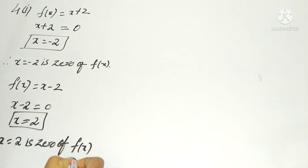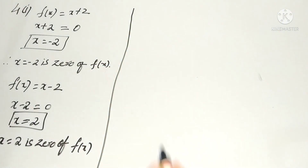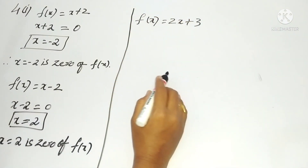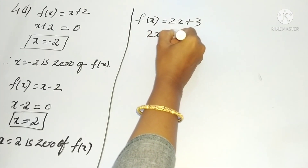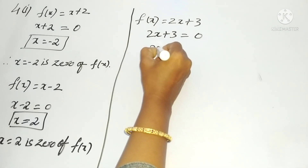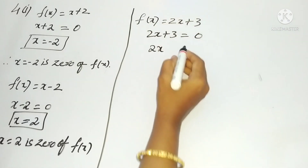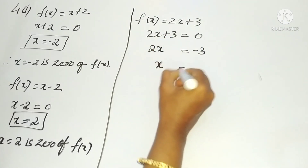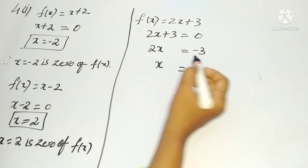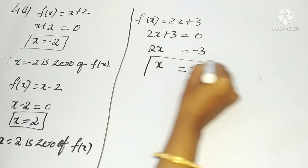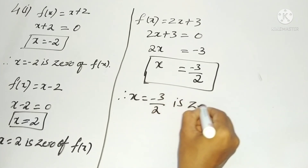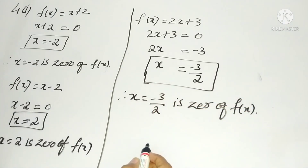The third problem: f(x) = 2x + 3. Take the polynomial and equalize to zero. Transpose all constants to the RHS — plus becomes minus — so 2x = -3. Since 2 is under multiplication, when we transpose it comes under division, so x = -3/2 is the zero of f(x).